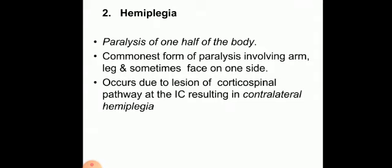The second category is hemiplegia — paralysis of one half of the body. This is the commonest form of paralysis, involving the arm, leg, and sometimes the face on one side. It usually occurs due to a lesion of the corticospinal pathway at the level of the internal capsule, resulting in contralateral hemiplegia, because 80% of the fibers decussate and cross to the opposite side. Therefore a lesion at the internal capsule causes contralateral hemiplegia.